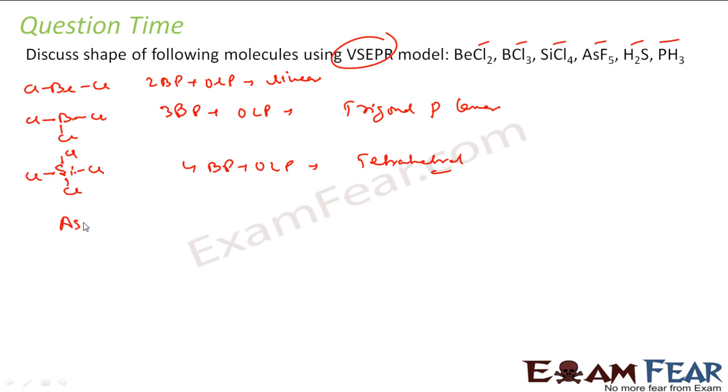We talk about AsF5. So AsF5 also if you see, it has 0 lone pair, 5 bond pair and 0 lone pair. So in that case it is trigonal bipyramid. We talk about H2S. So you have sulfur, you have hydrogen, so you have 1 lone pair. So you have 1 lone pair plus 2 bond pair that is a bent shape.